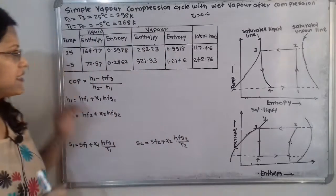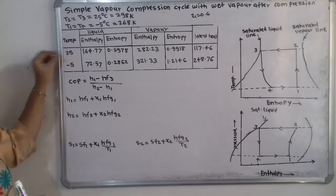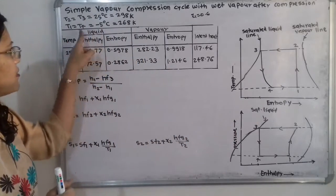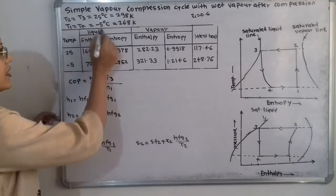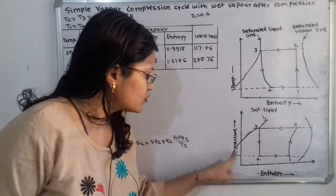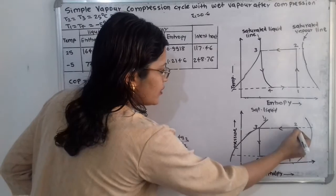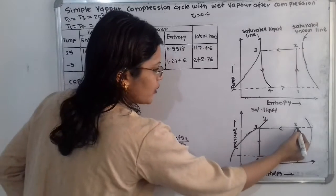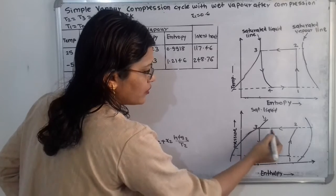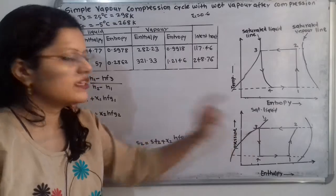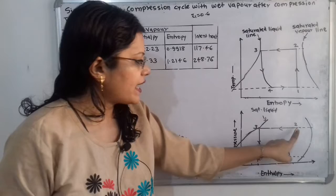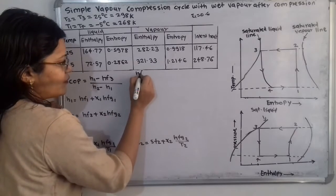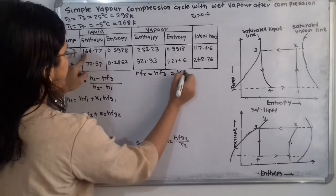Now from the table, at 25 degree Celsius, points 2 and 3 are the relevant points and the liquid enthalpy is given. Referring to the pressure-enthalpy diagram, at points 2 and 3 we extend to the saturated liquid line. The point of intersection gives us the liquid enthalpy, and point 3 itself lies on the saturated liquid line. So HF2 is equal to HF3 is equal to 164.77.